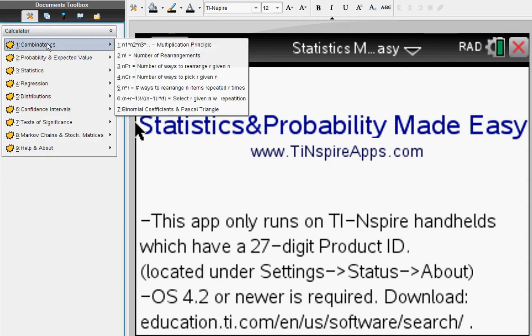So here you can see under combinatorics you find all the permutation combination formulas, even Pascal triangle and binomial coefficients.